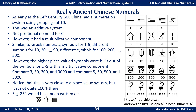You had symbols for one through nine — they didn't really need a zero. Then you had different symbols for 10, 20, 30, 40, up to 90. Different symbols for 100, 200, 500, and so on. And different symbols for 1,000, 2,000. However, the higher place-valued symbols were built out of the symbols for one through nine with a multiplicative component.